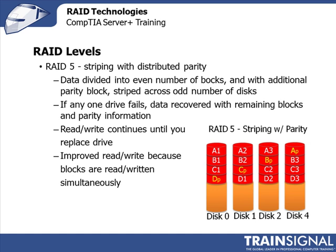That brings us to RAID level 5, which is called Striping with Distributed Parity. Under this scenario, data is divided into an even number of blocks with an additional parity block, and striped across an odd number of disks. We've got four disks in the array with blocks of data striped across, and parity is written across every drive in the array. With RAID 5, if one drive fails, the data can be recovered with the remaining blocks plus the parity information, and read-write operations will continue until you replace the drive.